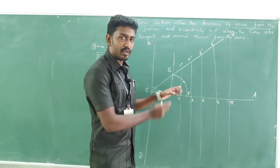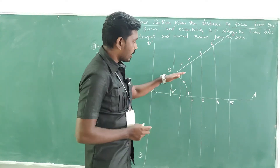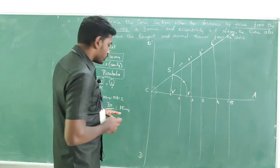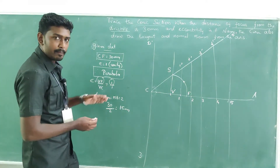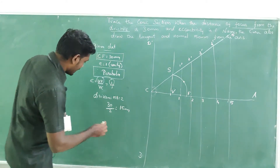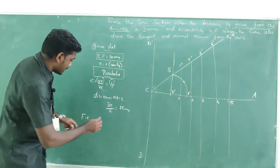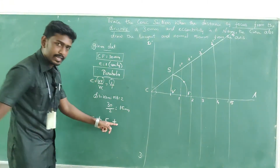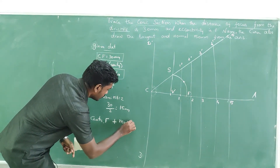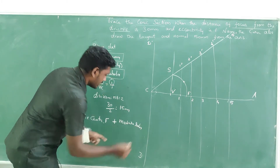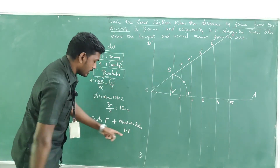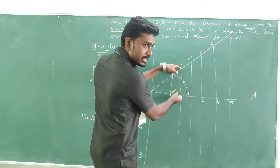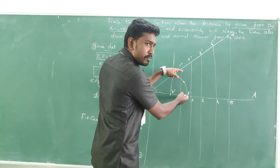The construction work is complete and we are ready to pick all the points. The common procedure for picking points in a conic section is: fix the center as the focus, then measure the radius. For the first point, measure line 1 to 1' with your compass, keep focus F as center, and go for a cut mark on the respective first line.